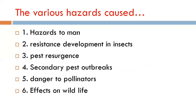Various hazards are caused by pesticides. The first is hazard to man: pesticides and insecticides are highly toxic to a wide range of animals including humans. Persistent pesticides contaminate the environment, and through factors like food, water, milk, and meat, they reach human beings — causing poisoning. This constitutes a hazard to man.